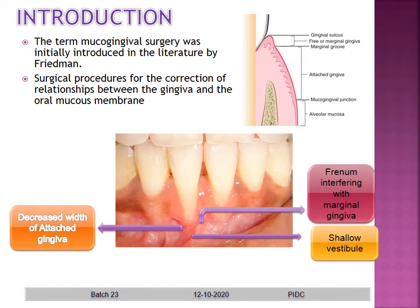The term Mucogingival Surgery was initially introduced in the literature by Friedman. This term covers the surgical procedures for the correction of the relationship between the gingiva and the oral mucous membrane.